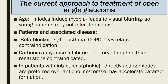Miotic-induced myopia can cause visual blurring, so miotics may not be tolerated by younger patients. For associated diseases: beta blockers are contraindicated in asthma and COPD. In patients with a history of nephrolithiasis (renal stones), carbonic anhydrase inhibitors are contraindicated. In patients with intraocular lens, directly acting miotics are preferred over anticholinesterases, as these may accelerate cataract formation.